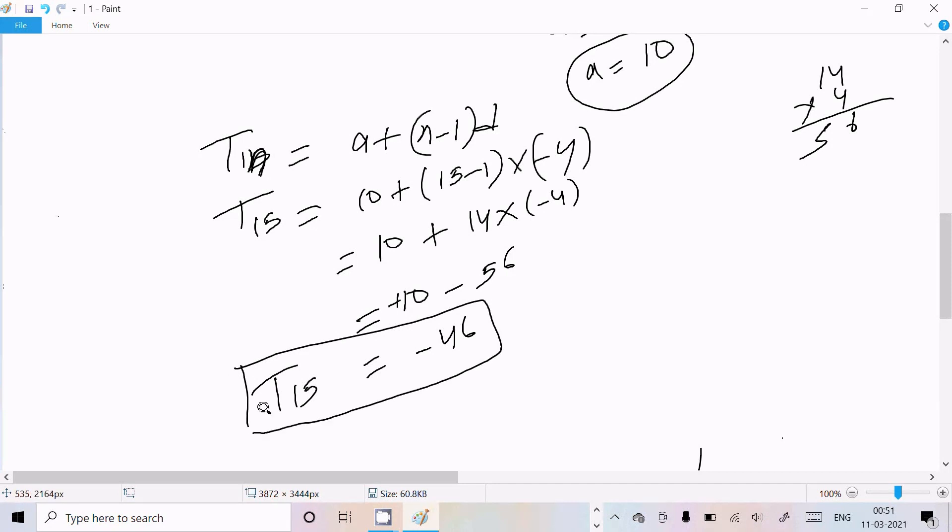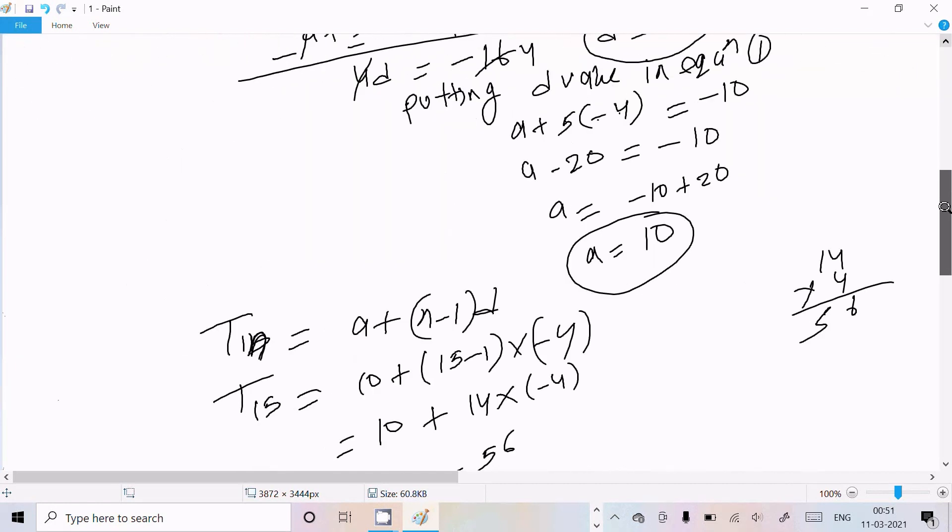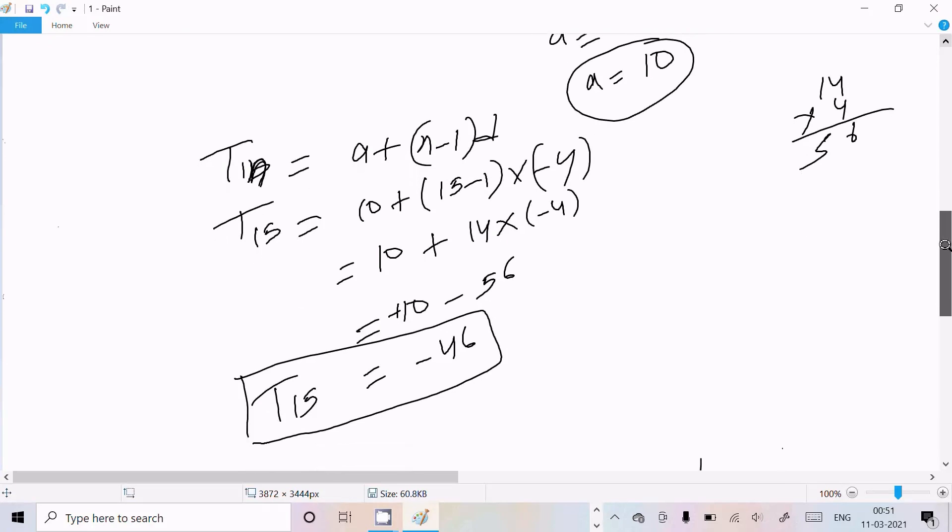So this is the way we can find out the 15th term. Make the equations, then calculate the first term and difference. When you've calculated the difference and first term, put them in T₁₅, then you can get the 15th term.